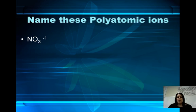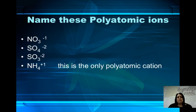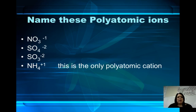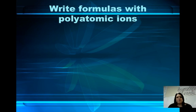I want you to become very familiar with the polyatomic ion chart that I gave you. You have NO3 with a minus 1 charge, SO4 with a minus 2 charge, SO3 with a minus 2 charge, and NH4 with a positive 1 — the only polyatomic cation. When you're done naming those, you can bring them in and we'll talk about them in class.